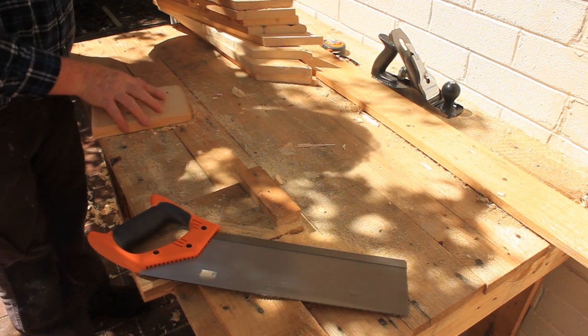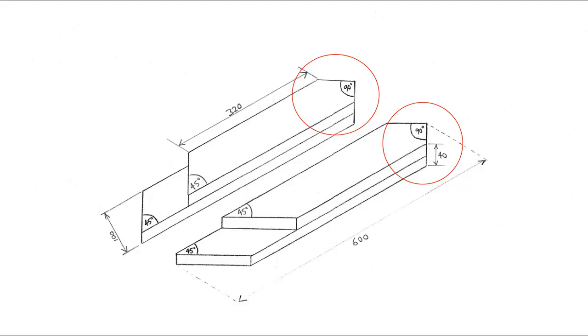That completes the saw work for the struts. It's easier to cut the 90 degree points on the other ends of the boards during the bench assembly process.